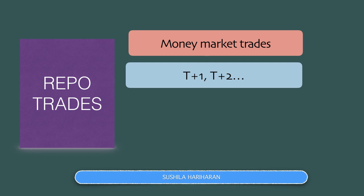Repo trades can be for durations such as trade day plus one, trade day plus two, trade day plus three, trade day plus four, and so on. These are symbolized as T+1, T+2, T+3, and so on.